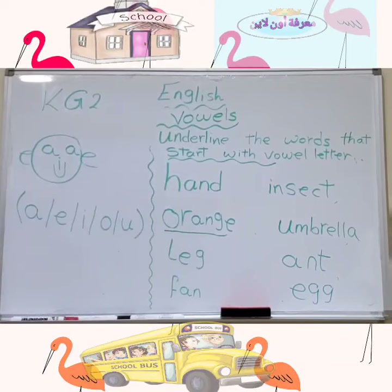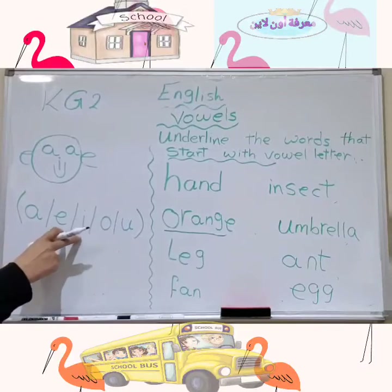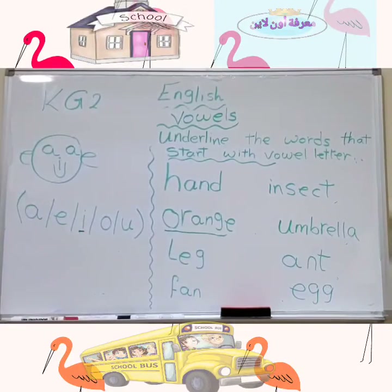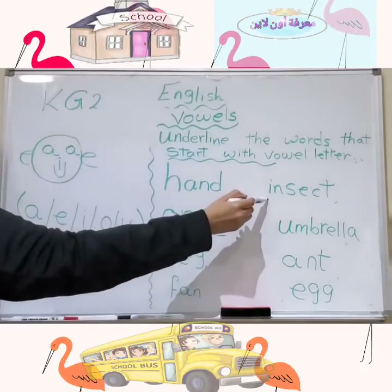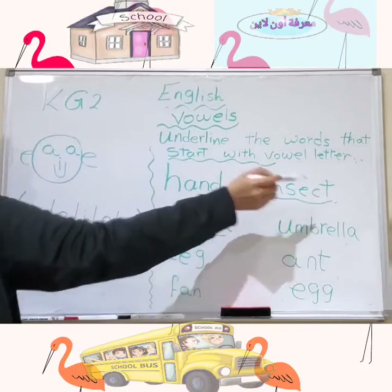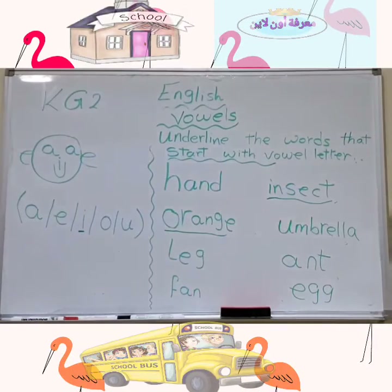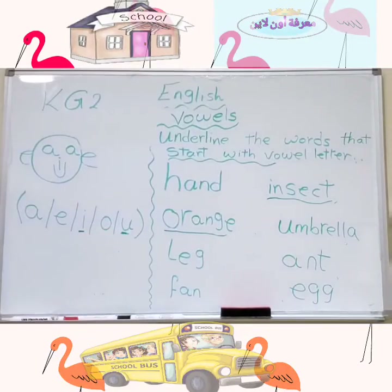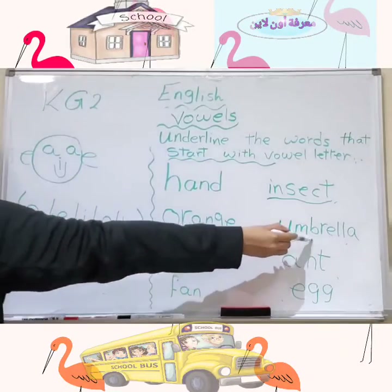'Insect' starts with the letter I. I is a vowel — yes! So we will underline it. 'Umbrella' starts with the letter U. U is a vowel — yes! So we will underline it.